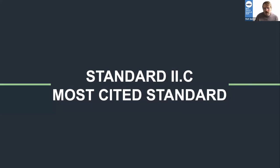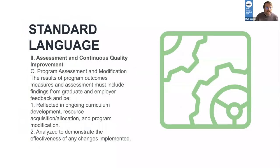The reason we are talking about Standard 2C today is because it is the most cited standard since we started collecting data in 2014. Standard 2C is under our Assessment and Continuous Quality Improvement section — Program Assessment and Modification. The results of program outcome measures and assessment must include findings from graduate and employer feedback, and be reflected in ongoing curriculum development, resource acquisition, allocation, and program modification, and also analyzed to demonstrate the effectiveness of any changes implemented.